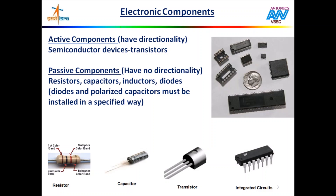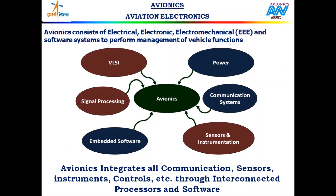Active components depend on an external power source to function. Examples are transistors and integrated circuits. Passive components do not require an external power source to function. Examples are the familiar resistors, capacitors, inductors and diodes. In an electronic circuit, active components and passive components are equally important. As we have now familiarized with electronics, let us learn about avionics.